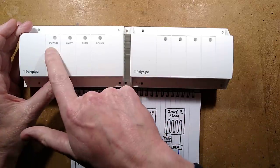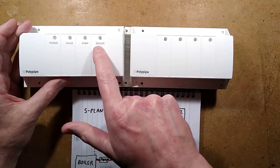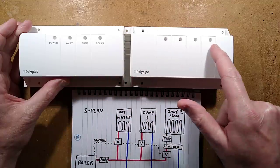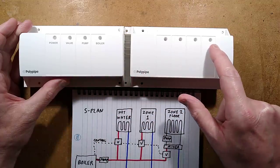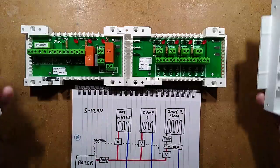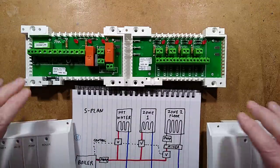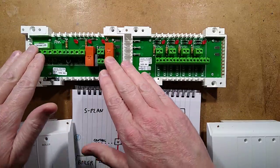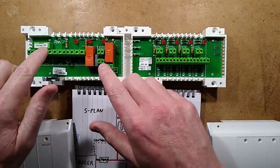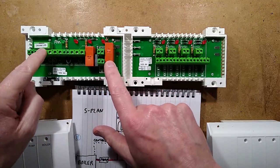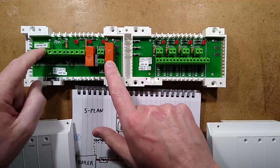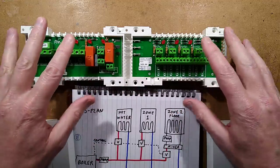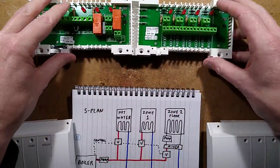Poly pipe, power, valve, pump, boiler, LEDs, poly pipe for LEDs to indicate zones. I'm going to be reverse engineering these circuit boards — I'm going to take them out and basically reverse engineer and draw the schematic, just to see how this all works.